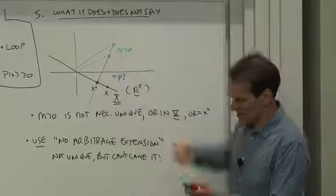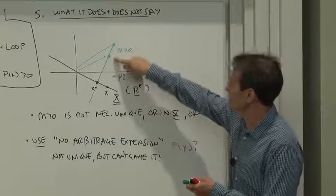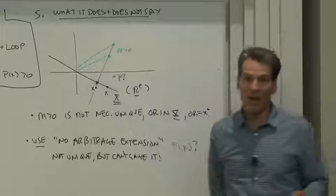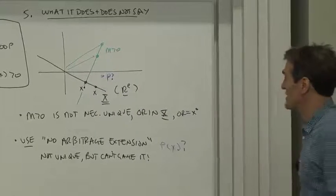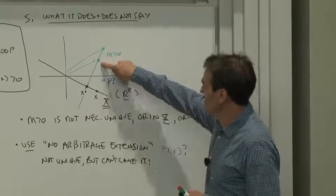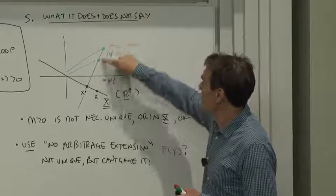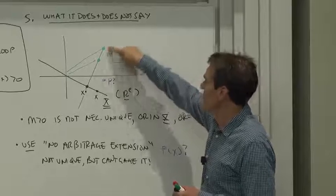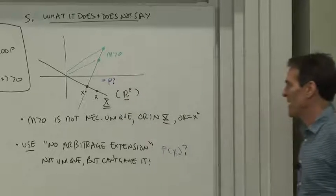Here are discount factors that are positive that price all the payoffs in the payoff space X the same as X star. So there is the positive discount factor. It's not the same as X star, and there are multiple positive discount factors, and the positive discount factors aren't in the payoff space.